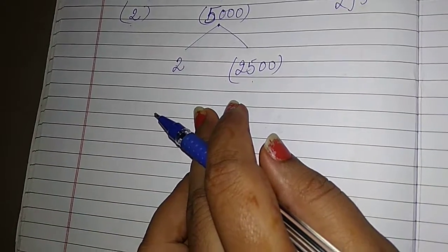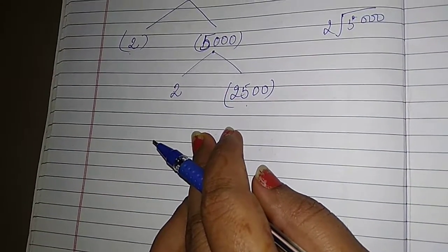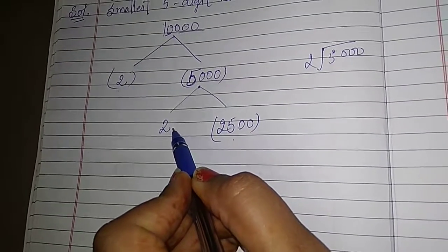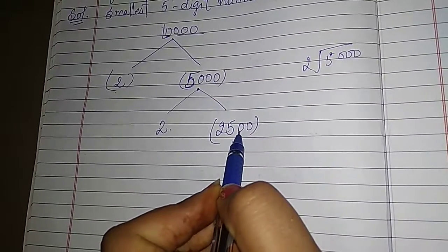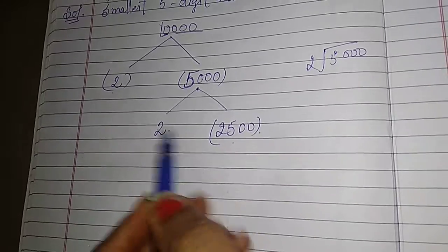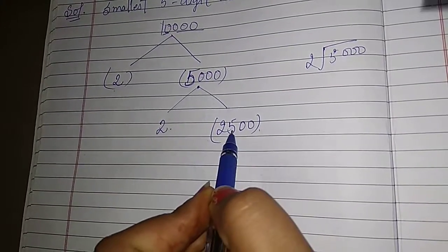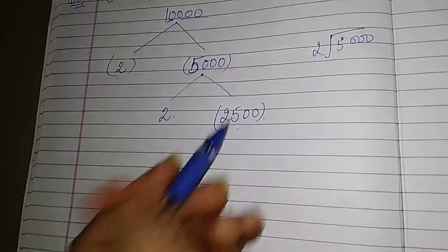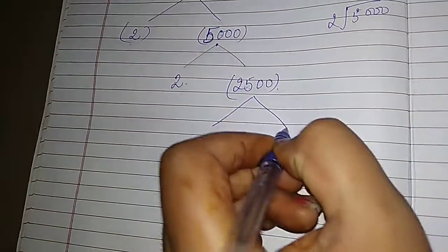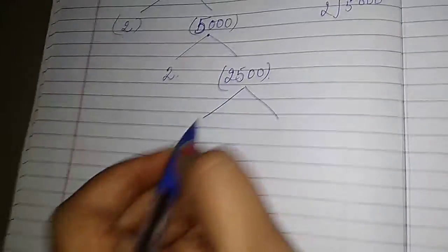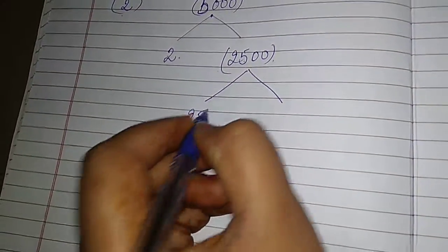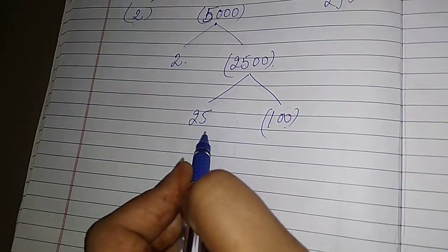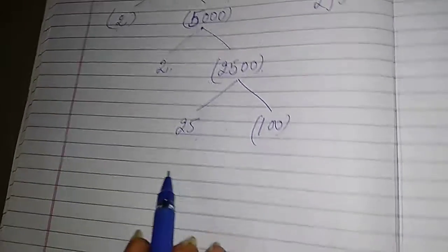Students, you can take other factors also. It's not necessary if I write here 2. Then you can write here 2500. If you take 5 into 1000, that's also countable. Now further again we write 25 and 100 because 100 into 25, that is 2500.